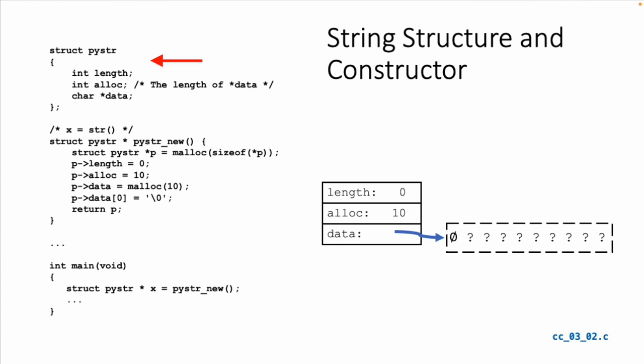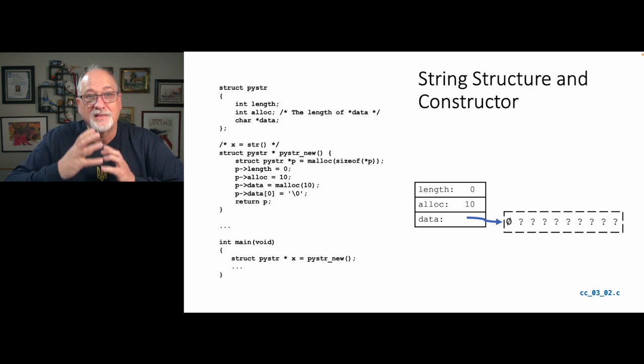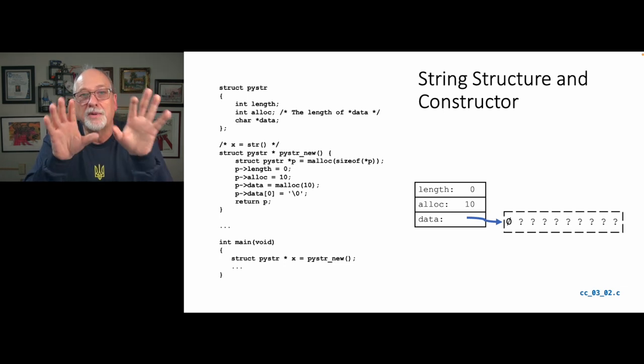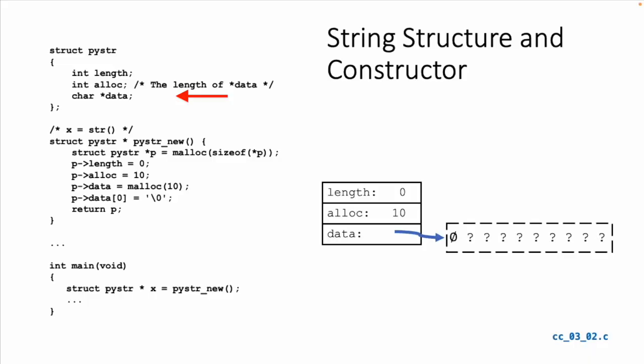Now we are going to build the PyStr class. We're going to create a structure called PyStr, and in that we're going to have three things: the length of the string, how much data we've got allocated in the string, and char star data, which is the actual character array. We're not going to let outside code touch this character array directly — we're going to completely manage it inside this object. In the concept of object orientation, length, alloc, and data would be thought of as private.